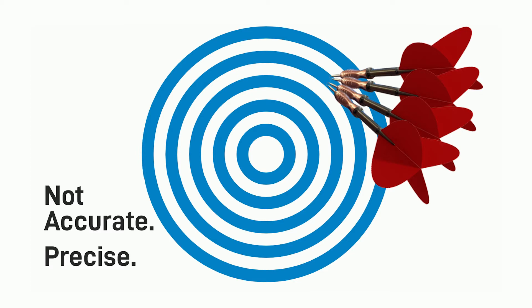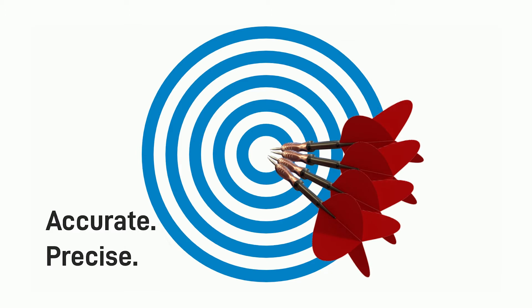Yet they're not accurate. Here we go — this looks great. We're both accurate and precise. These are the types of systems Automation One thrives at building.